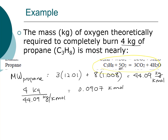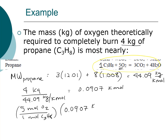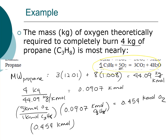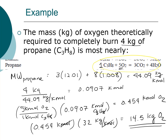We need 5 moles of oxygen for every 1 mole of propane. So we have 5 mol O₂ per 1 mol propane × 0.0907 kilomoles of propane = 0.454 kilomoles of oxygen. Multiplying by the molecular weight of oxygen, 32 kg/kmol — kilomoles cancel — gives 14.5 kilograms of oxygen. So 4 kilograms of propane requires 14.5 kilograms of oxygen.